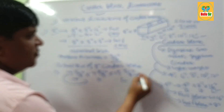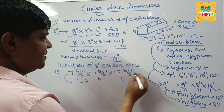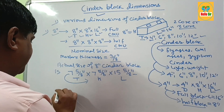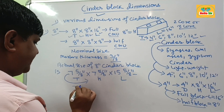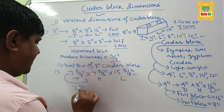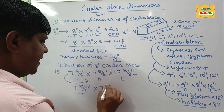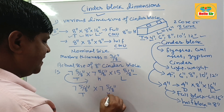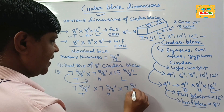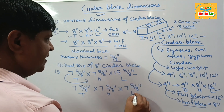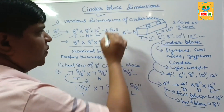The actual size of the Full CMU is 7 and 5/8-inches thick, 7 and 5/8-inches in height, and 15 and 5/8-inches in length. The actual size of the Half CMU is 7 and 5/8-inches in thickness, 7 and 5/8-inches in height, and 7 and 5/8-inches in length. This is the standard dimension of Cinder Blocks.